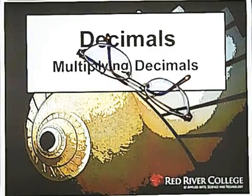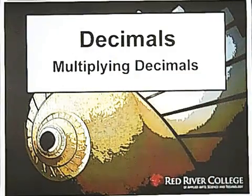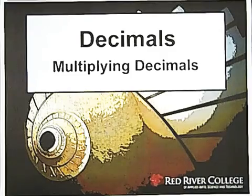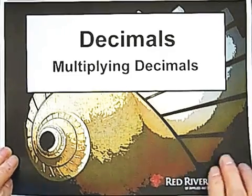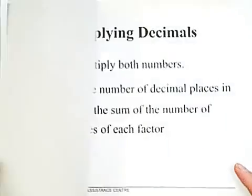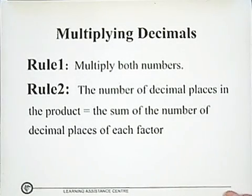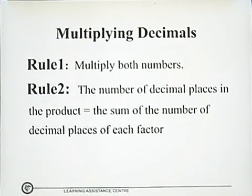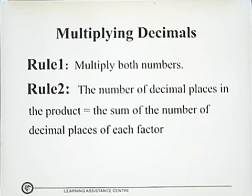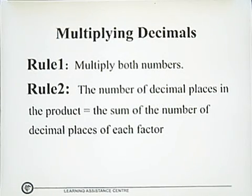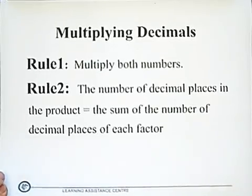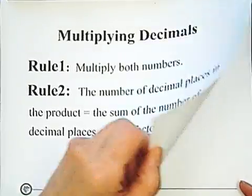Hi. Welcome to Wiseguys. Decimals — multiplying decimals. Rule 1: multiply both numbers. Rule 2: the number of decimal places in the product equals the sum of the number of decimal places of each factor. Let's see some examples.